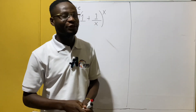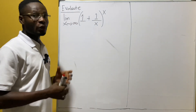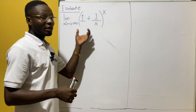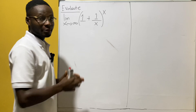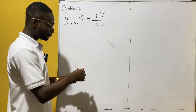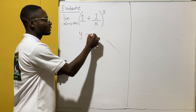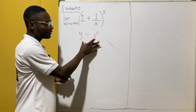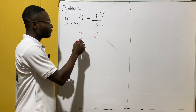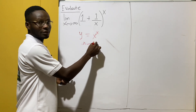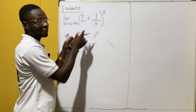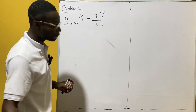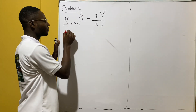Welcome to another video. In this episode we are going to look at how we can evaluate this particular function under this limit. When you have y equals x to the x and you want to differentiate, what do you do? You introduce ln to both sides. We are going to apply the same knowledge at this point.